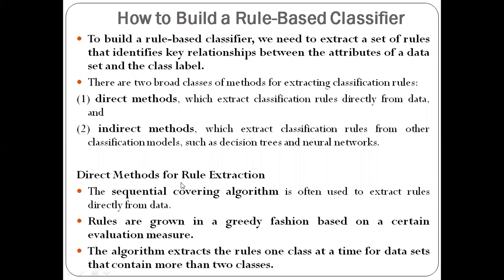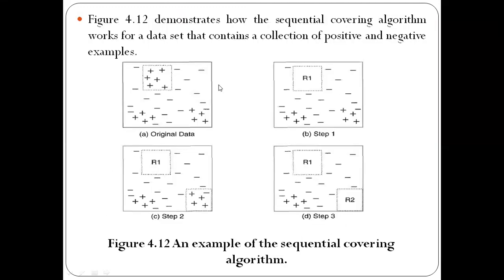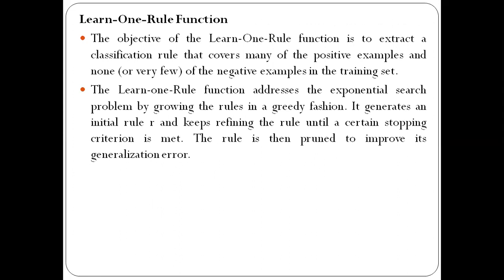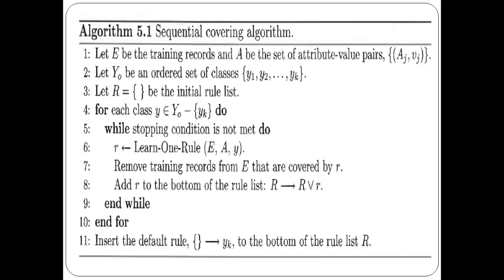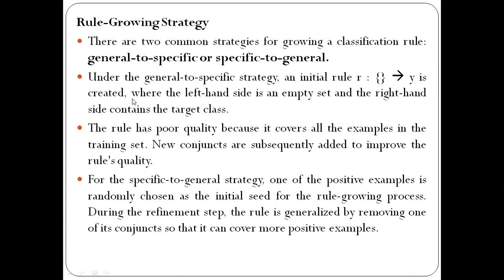In the last class we studied about one method for building a rule-based classifier using the direct method — specifically the sequential covering algorithm. Now we move on to how we can grow the rules in a rule-based classifier, that is, how we can add or improve the rules which are present in a rule-based classifier.